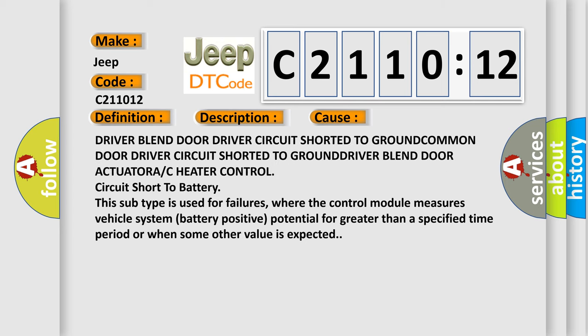Driver blend door driver circuit shorted to ground, common door driver circuit shorted to ground, driver blend door actuator A or C heater control circuit short to battery. This subtype is used for failures where the control module measures vehicle system battery positive potential for greater than a specified time period or when some other value is expected.